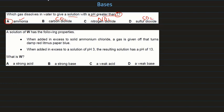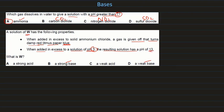Solution W: when added to excess solid ammonium chloride, a gas is given off that turns damp red litmus paper blue — so W is a base. When added to a solution of pH 3 (acidic), the resulting solution has pH 13. A pH of 13 is not from a weak base — it must be a strong base. These were questions related to bases; now let's see some questions related to indicators and pH.